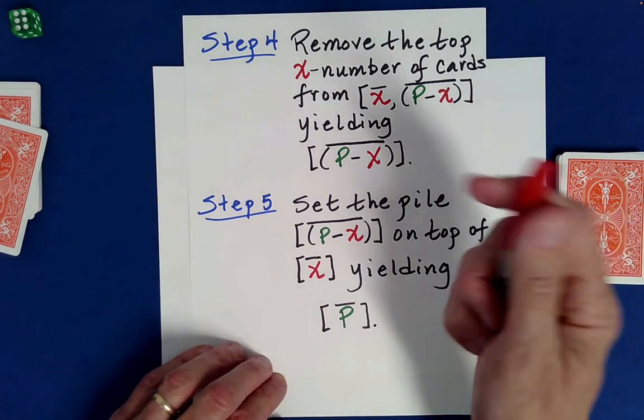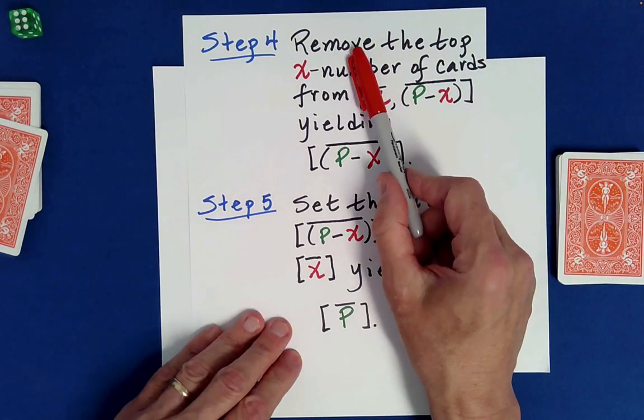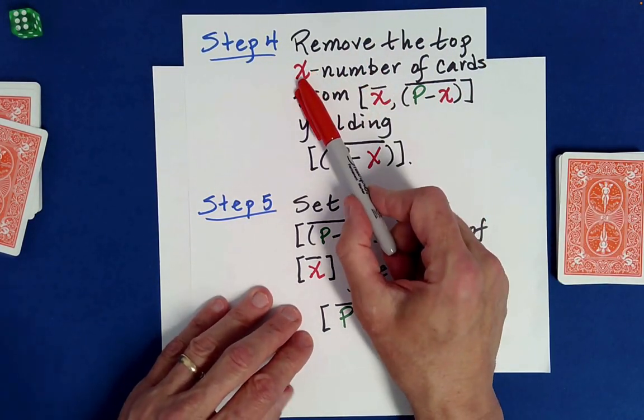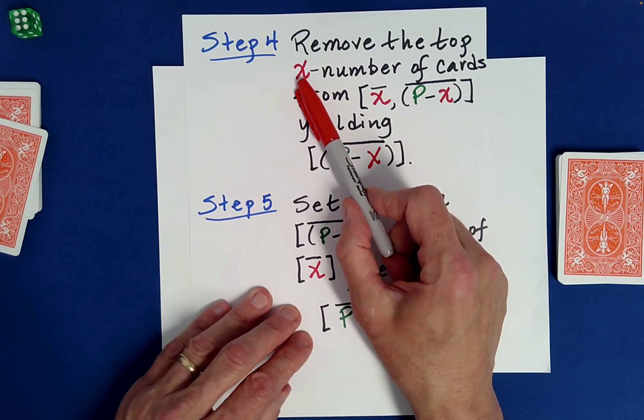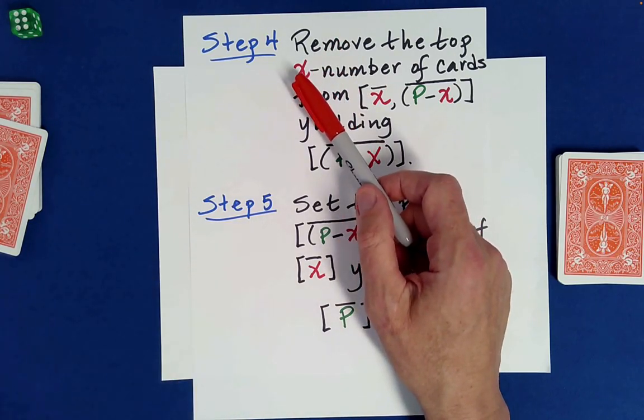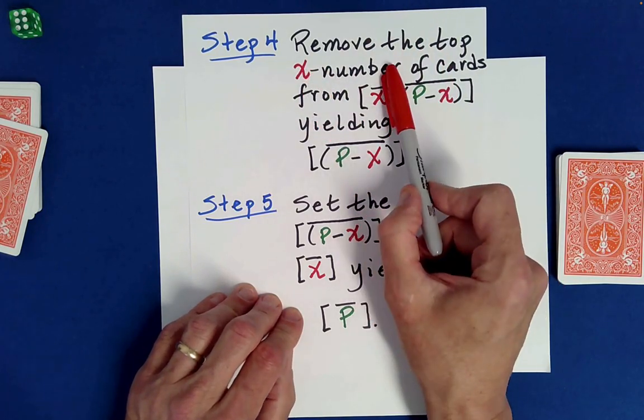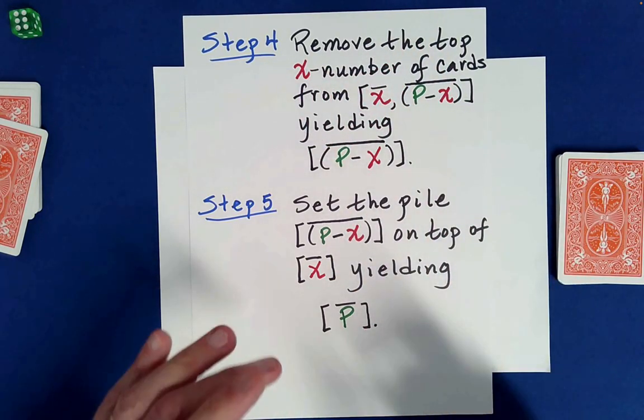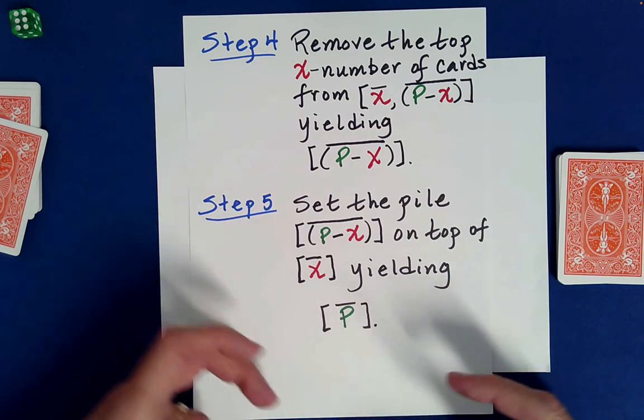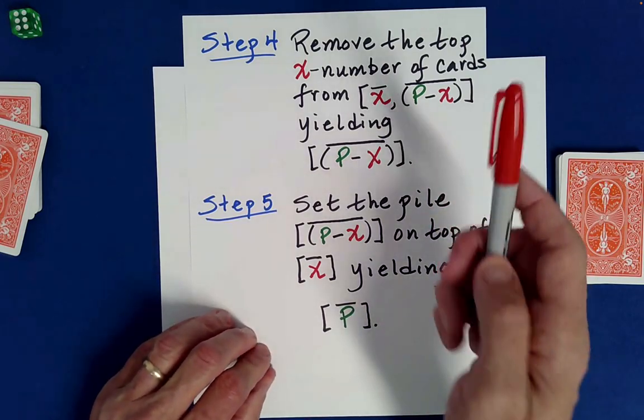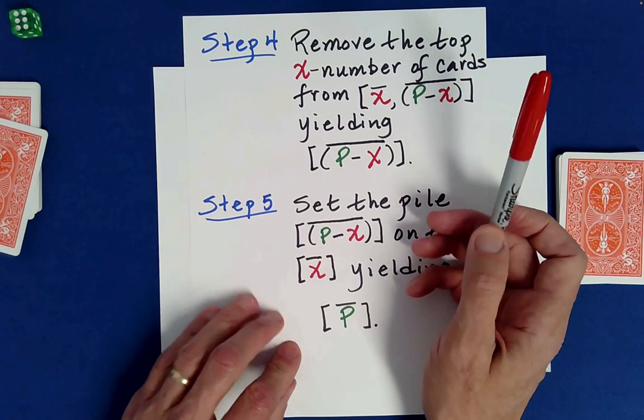Now there's two purposes for doing that. One is to find out how many there are quantity, but as I reverse count those, it reverses the order of those cards. Okay. So that's an important thing to realize as well. Okay. And we're almost done here.